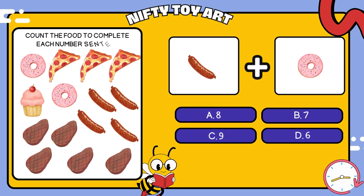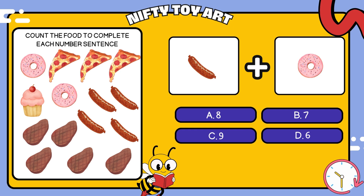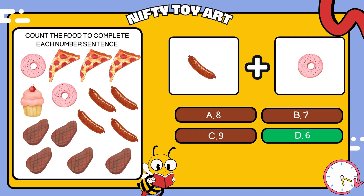We have sausages and donuts. How many foods is that in total? That's right, six.